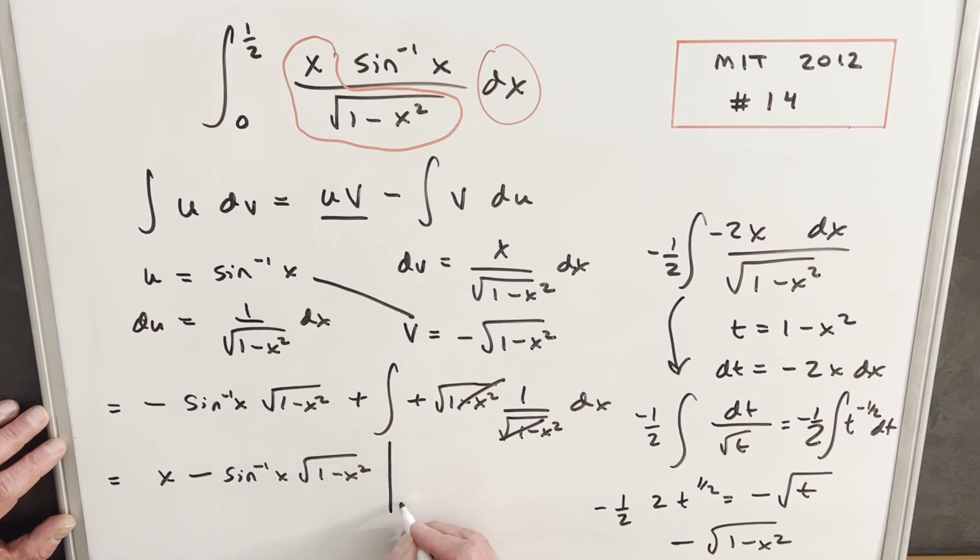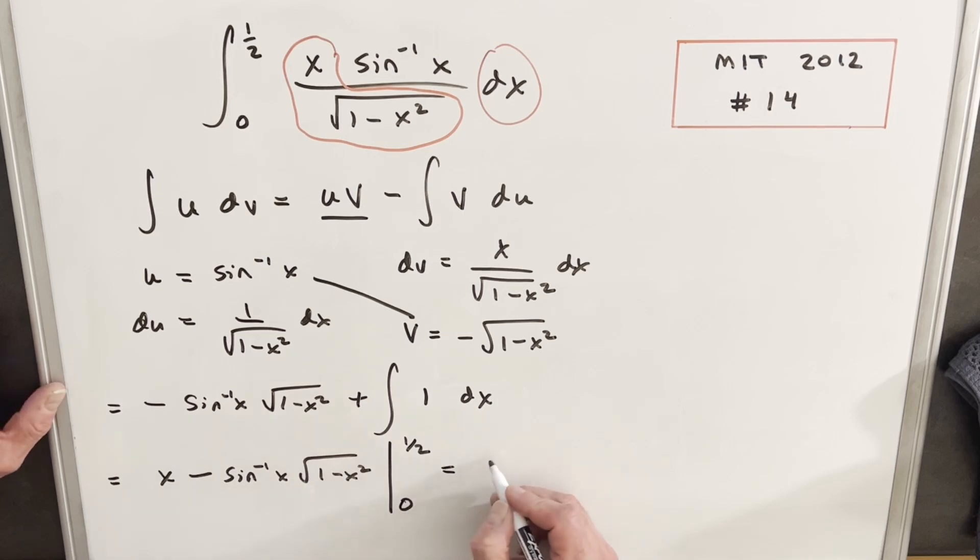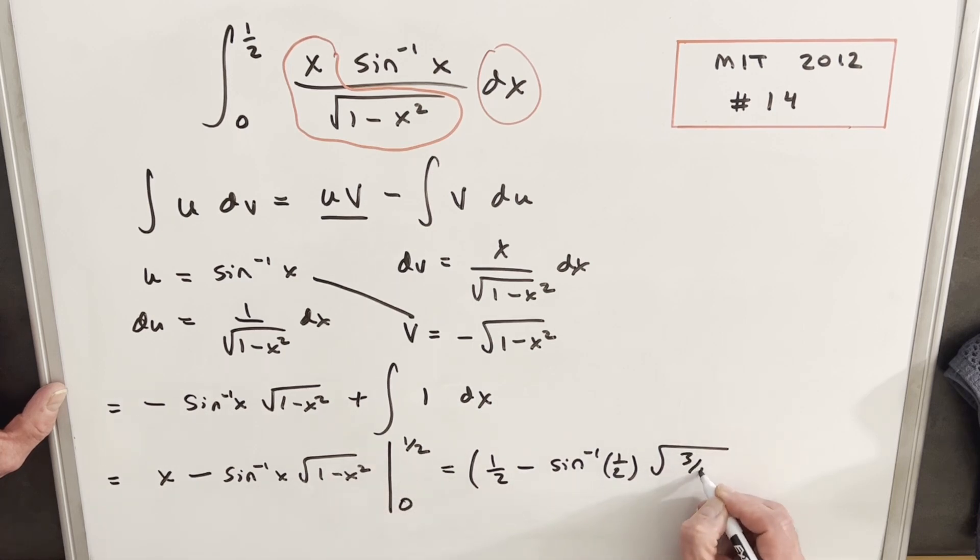And we just need to evaluate this from 0 to 1/2. We'll plug in 1/2 first, so we're going to have 1/2 here minus sine inverse at 1/2, and then square root of 1 minus x squared. So 1/2 squared is 1/4, so this is going to be the square root of 3 over 4.